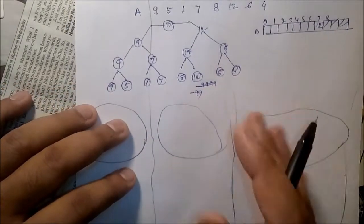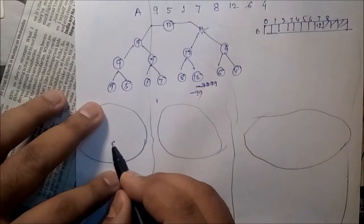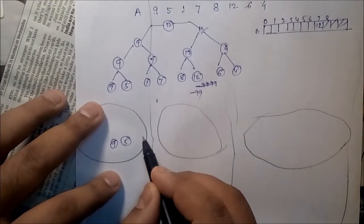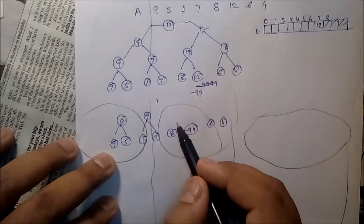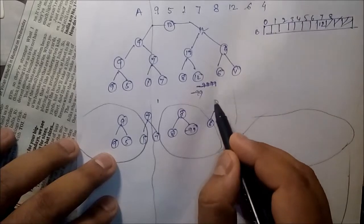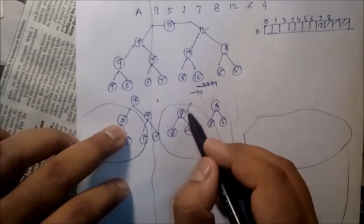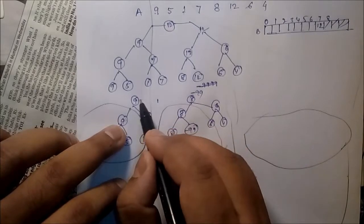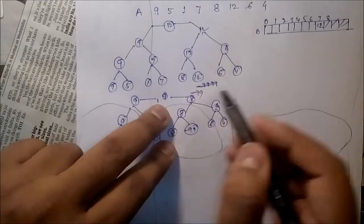Now, once again, if you draw the tree, 9, 5, 1, maximum is 7, maximum 8, maximum 6. Compare these two, 9 and 7, maximum 9. Compare these two, maximum 8. Compare 8 and 9, maximum is 9. So put 9 here.